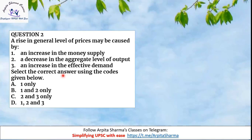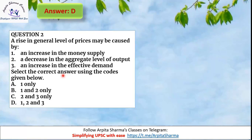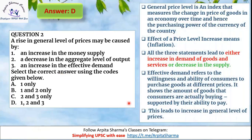The correct answer is option D — all of them. A rise in general price level means inflation. If money supply increases, inflation rises because people have more money. A decrease in the aggregate level of output means a decrease in supply. The general price level is an index that measures the change in price of goods in the economy over time and hence the purchasing power of the currency.